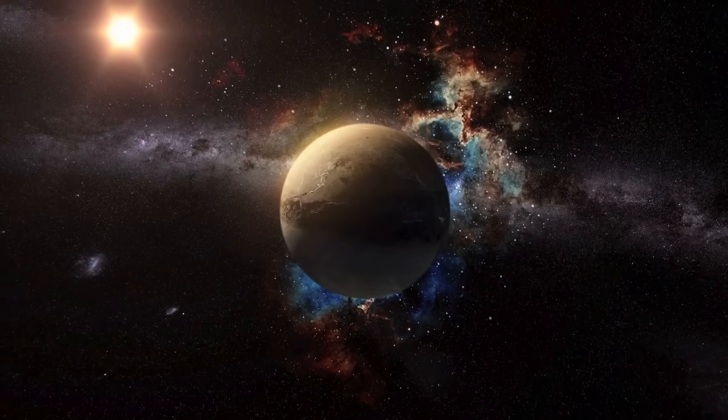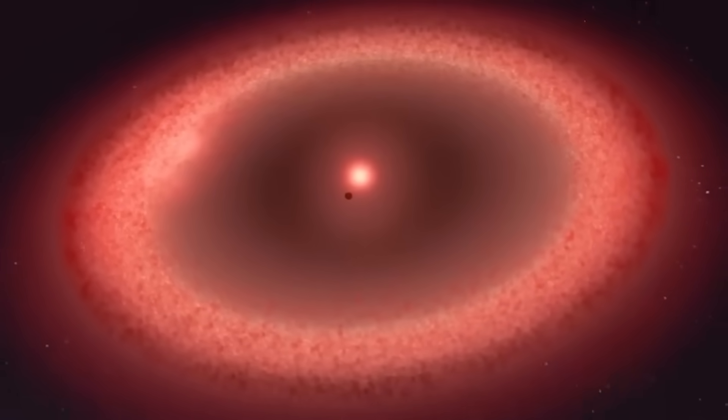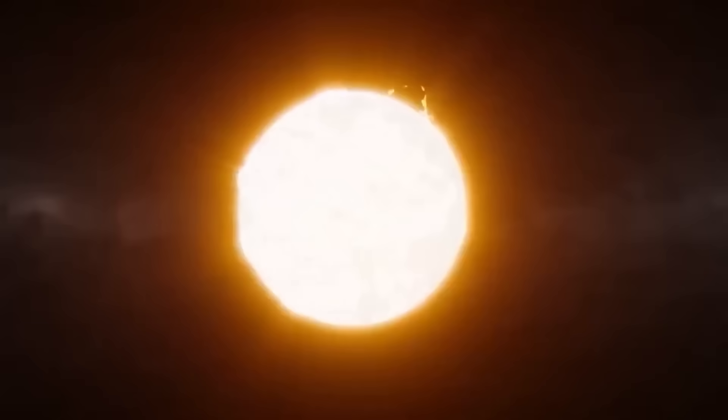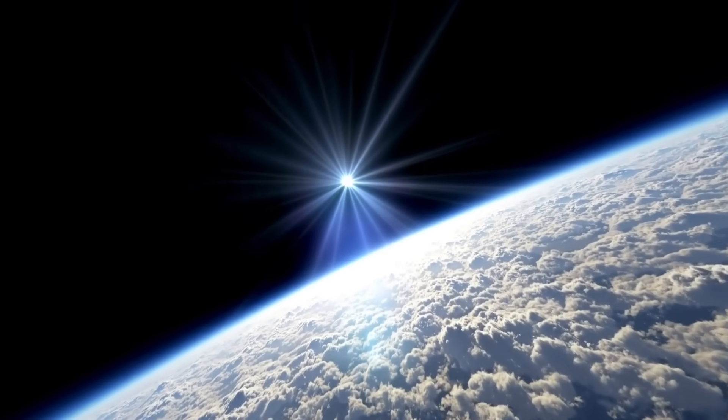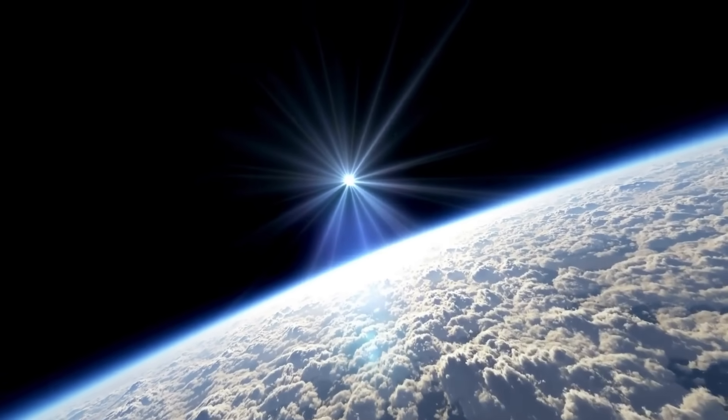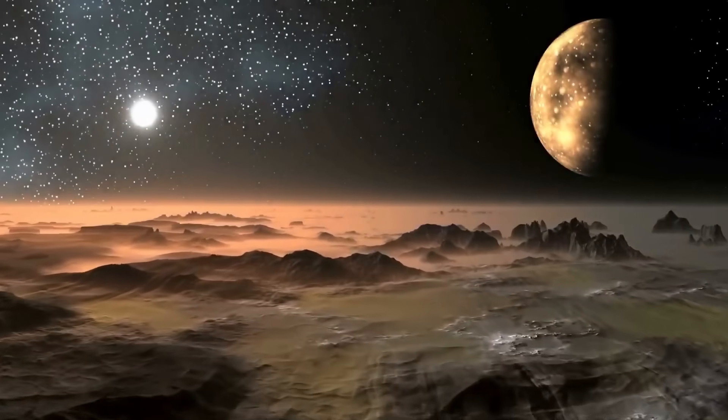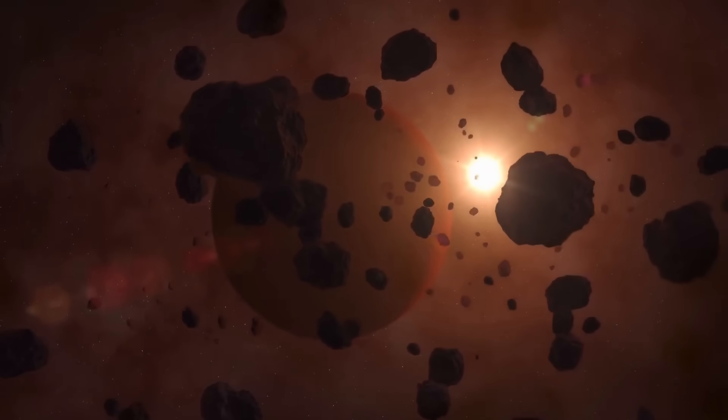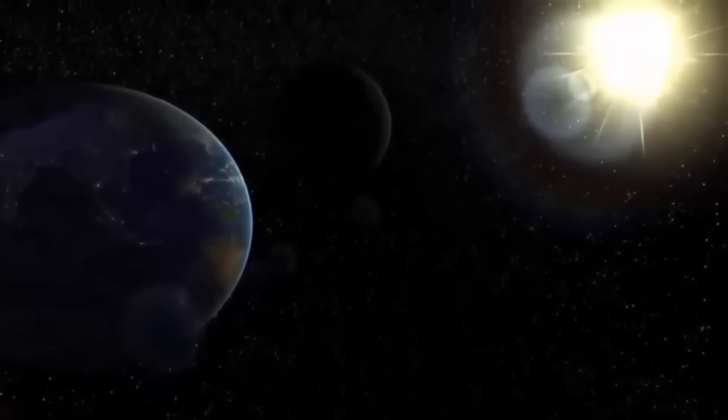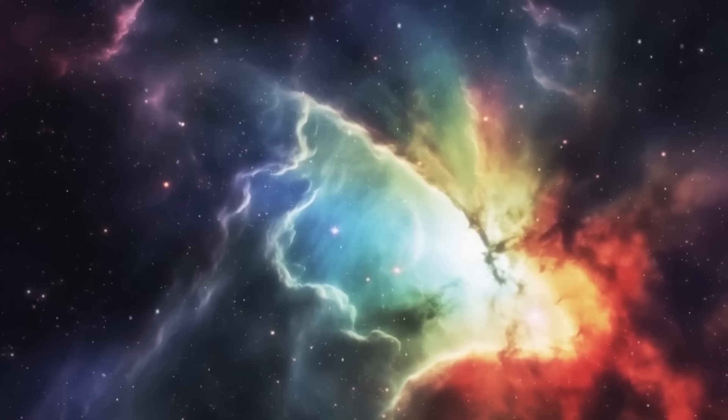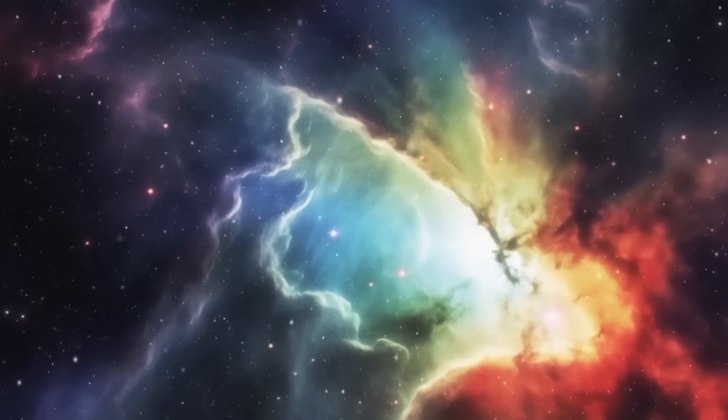Despite appearances, Proxima Centauri is a little red dwarf that emits far less energy than our Sun, despite the fact that it is so close to its parent. Considering this, how would it feel to stand on Proxima b and look up at Proxima Centauri? The star, which is approximately three times bigger than the Sun, would look like a muted red sphere in the sky.